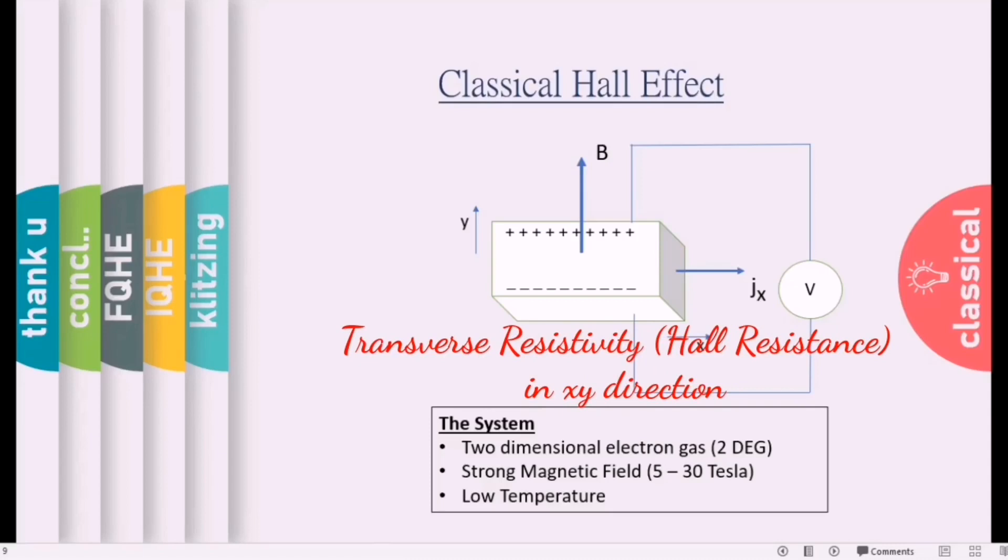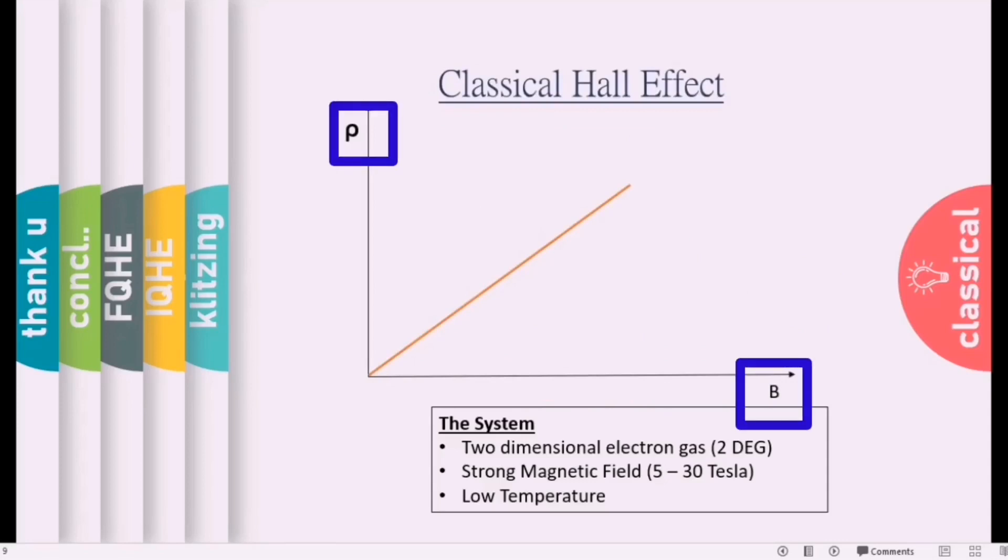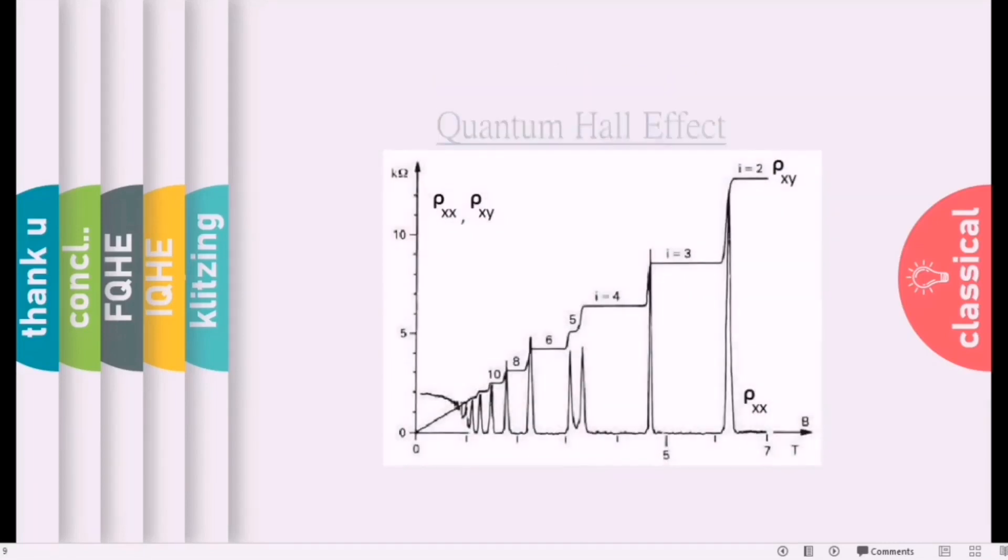There is another one which is called transverse resistivity, it is ρxy, also called as Hall resistance. So according to classical Hall effect, if you plot a graph between magnetic field and Hall resistance or transverse resistivity, it will be linear, a straight line as a function of magnetic field.